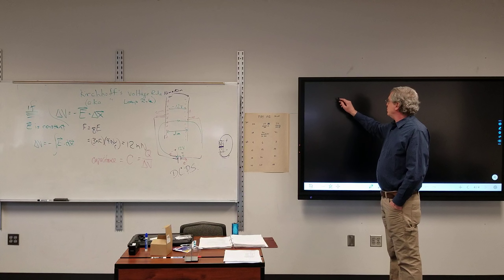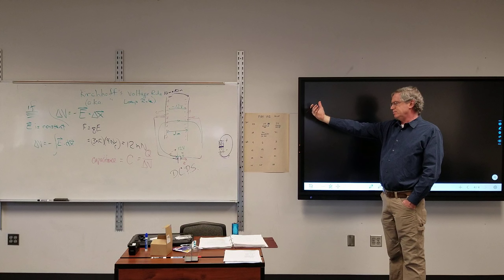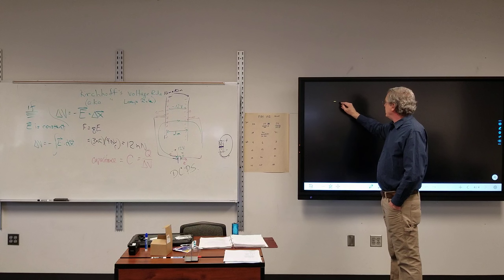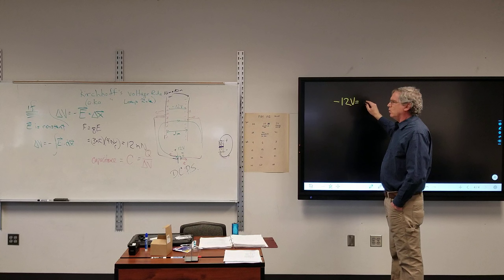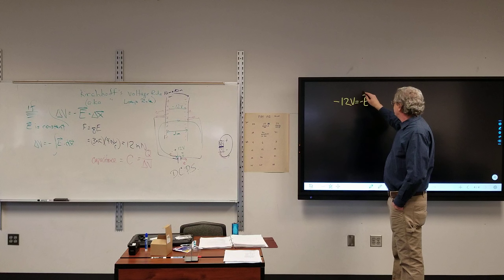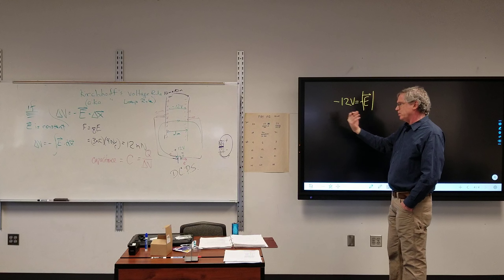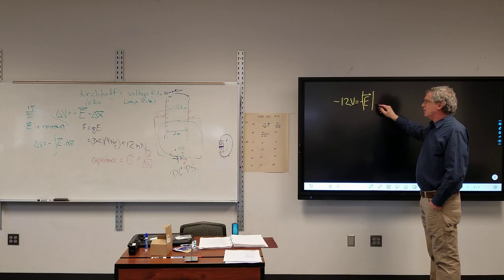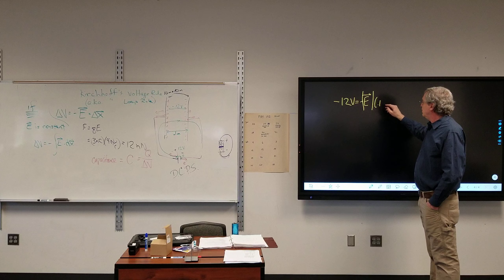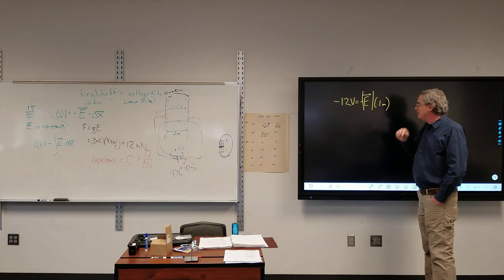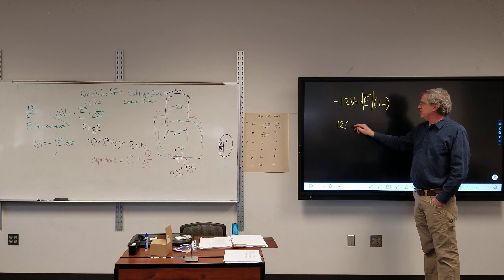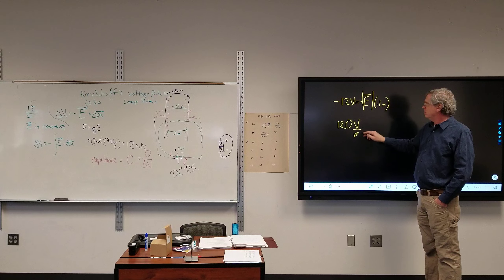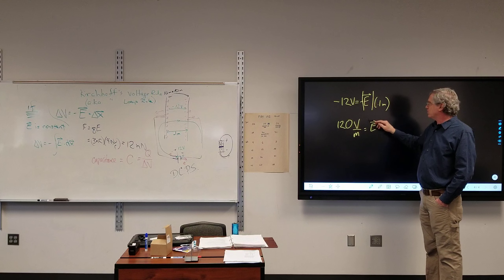In this particular problem, I know I'm going from left to right. So: negative 12 volts equals negative electric field times 0.1 meters. The negatives cancel out. I'm left with 120 volts per meter — this is equal to my electric field strength.